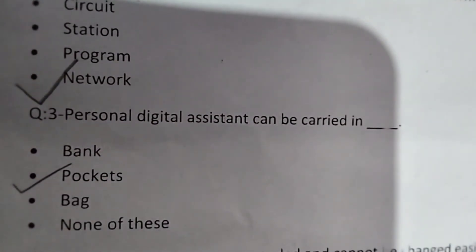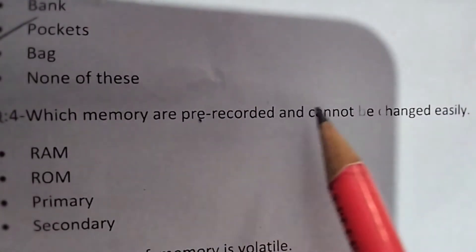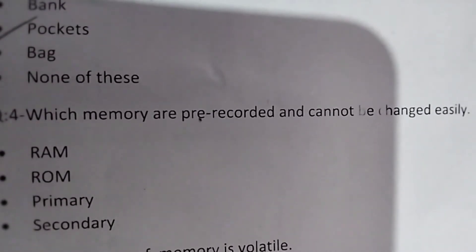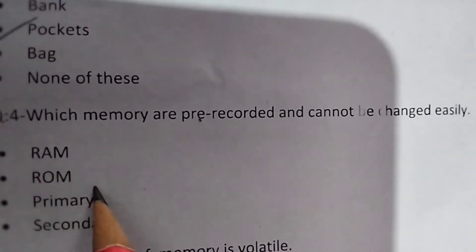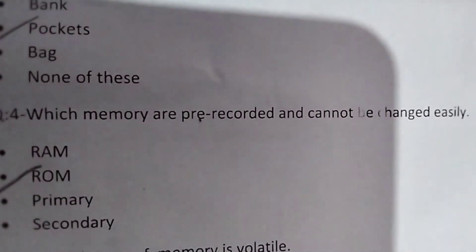Which memory are pre-recorded and cannot be changed easily? Which memory is pre-recorded and is not easily changed? RAM, ROM, primary and secondary memory. Which memory? ROM. ROM memory is not changed.